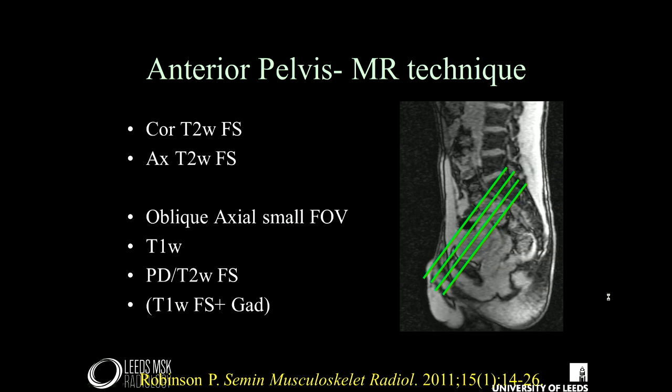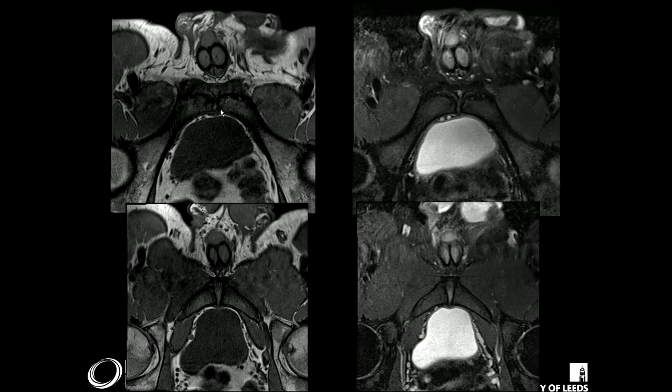These are the sort of images you get. Here are some T1-weighted images through the anterior pelvis. You can see the pubic bodies and the junctional area with the capsule, the adductor and rectus abdominis tendons, and more inferiorly more adductor and capsular tissue. On the T2-weighted, you can see the old apophysis, a bit of fluid, and beautiful detail of the symphysis pubis itself.